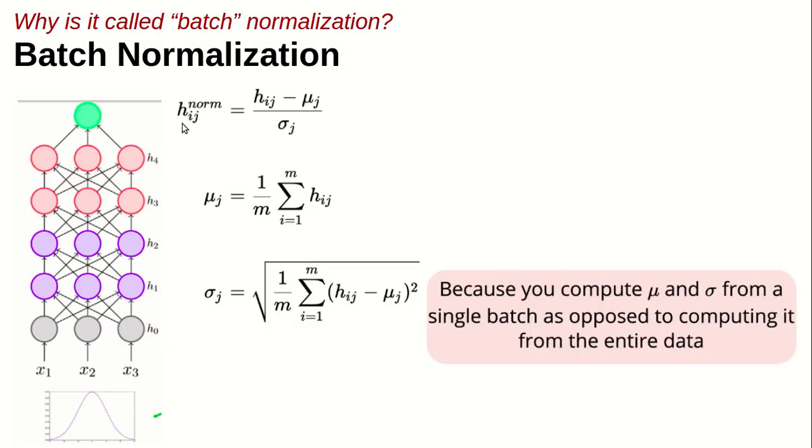The formula would be the same. This is the h_i normalized formula: subtract mean from all the individual elements and divide it by standard deviation. The formula would be the same for mean and for standard deviation.